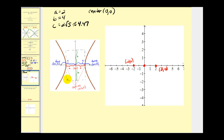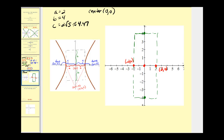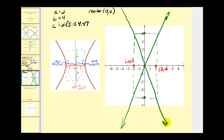Next, we'll construct the rectangle so we can sketch in the asymptotes to help make a nice graph. We went left and right a units; now we go up and down b units. Since b equals 4, we go up to 4 and down to −4. We use those four points to construct the rectangle, then sketch the asymptotes through the diagonals. From here we can make the graph: it starts at each vertex and approaches the two asymptotes.